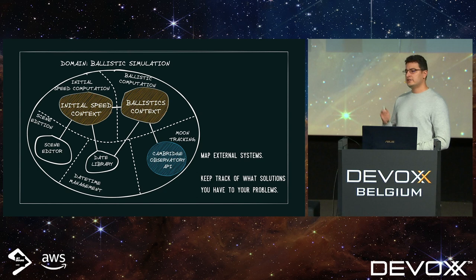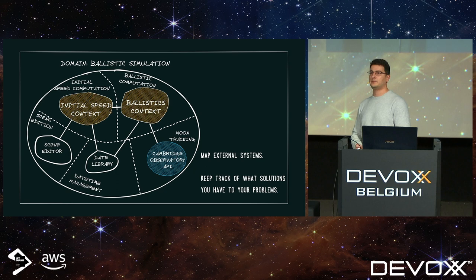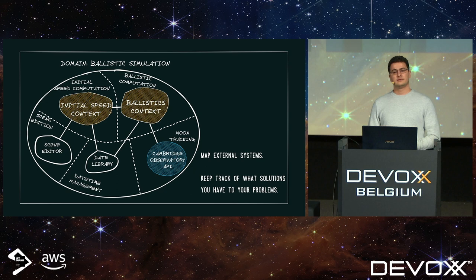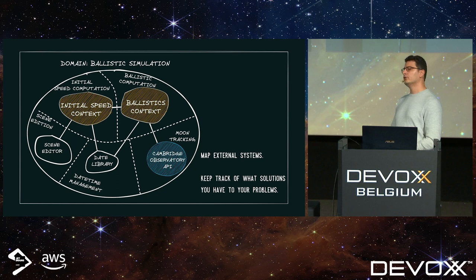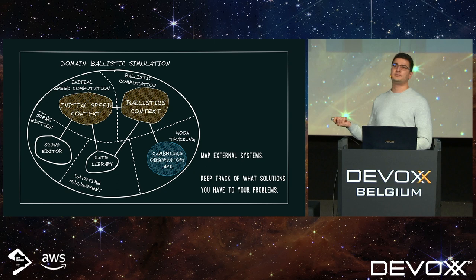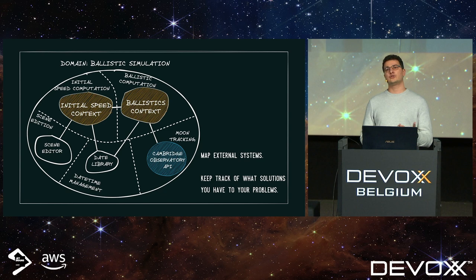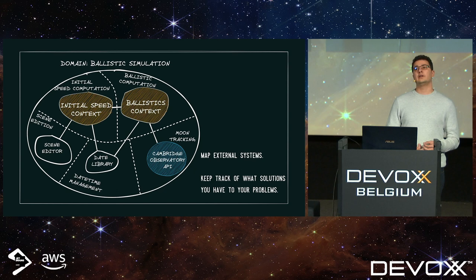On this map, we also want to represent external systems. Here, we're not tracking the moon ourselves — it's way too much work. The Cambridge Observatory is already doing this and exposing its API. But we still need to understand every problem we have and write down every solution. At some point we can also wonder: where does this stop? At which point do we stop breaking it down and extracting new contexts? There's no true answer. There are pros and cons to large or smaller bounded contexts. The only thing that matters is finding a way to keep your model's integrity without having too much work.